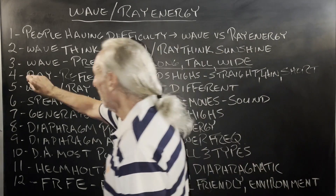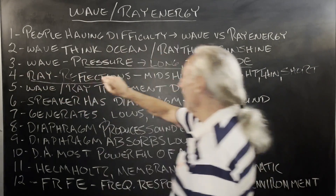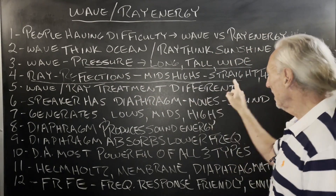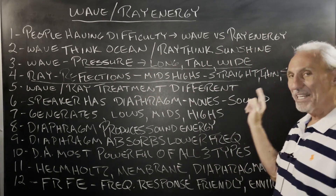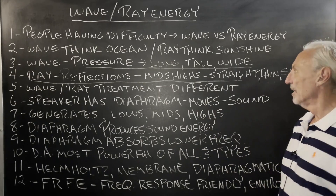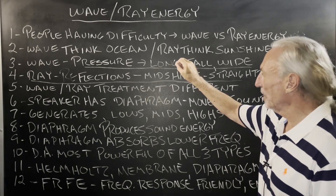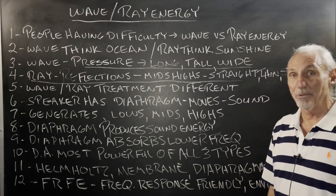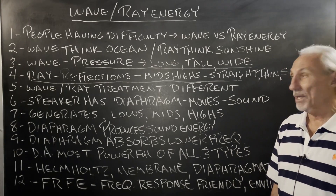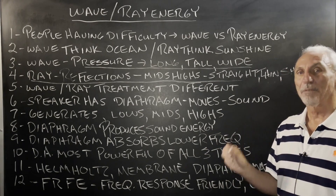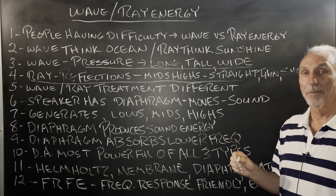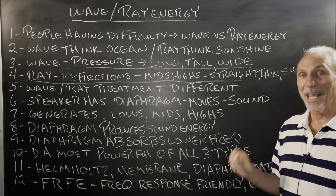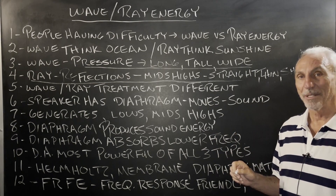Ray energy is different. Ray energy — we want to think of that as sunshine: straight, thin, short. Where wave energy is long, tall, and wide — fat, if you want to say it. These are different types of energy in your room. They both produce different problems, and they can't be treated with the same treatment.